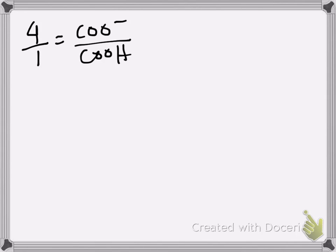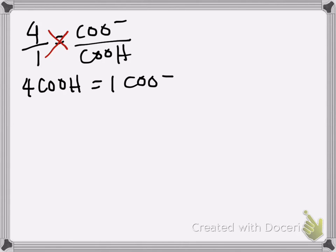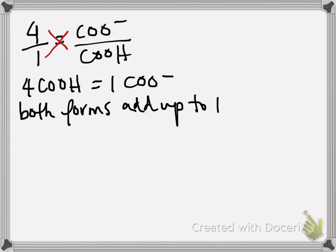From this point, there are two ways to do this. One way is to cross-multiply, and you get 4 COOH equals 1 COO⁻. In this method, you just cross-multiply. When you do that, you know that both forms add up to 1 — as in the whole. So however much COO⁻ you have plus however much COOH you have equals 1.